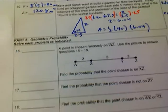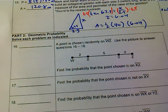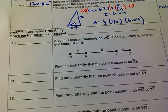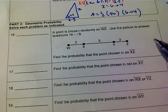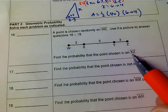Let's look at a little geometric probability now. It says a point is chosen randomly on WZ. Use the picture to answer the question. What's the probability? If it's on WZ, what's the probability it's on XZ?